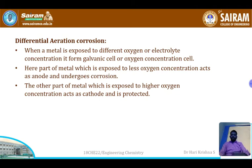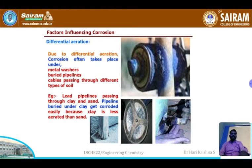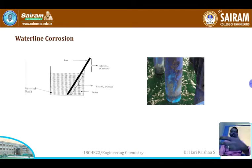Differential aeration corrosion has two types: water line corrosion and pitting corrosion. Examples include metal washers, buried pipelines, cables, oil pipelines, etc. Let us discuss water line corrosion first.